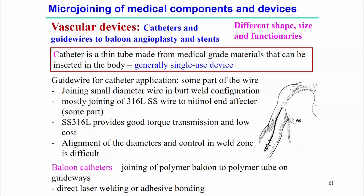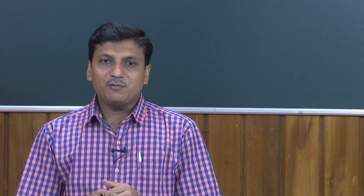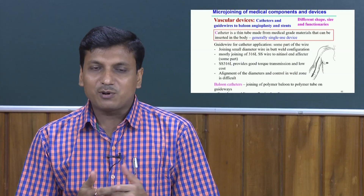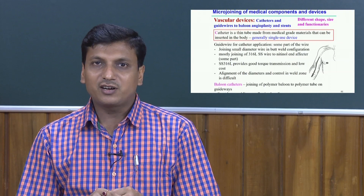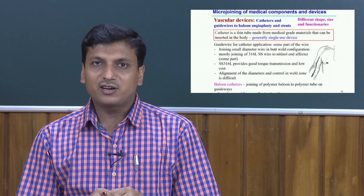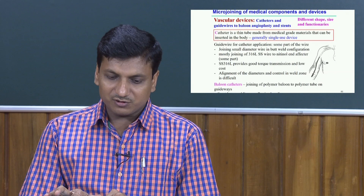SS316L stainless steel is used because it provides good transmission and low cost, but alignment of the diameter and control in the weld zone is really very difficult. In this case, laser welding can be a good solution. For balloon catheters, joining of the polymer balloon to the polymer tube on the guide wires is sometimes required, and in this case either direct laser welding or adhesive bonding is generally used. These vascular devices are generally single-use.